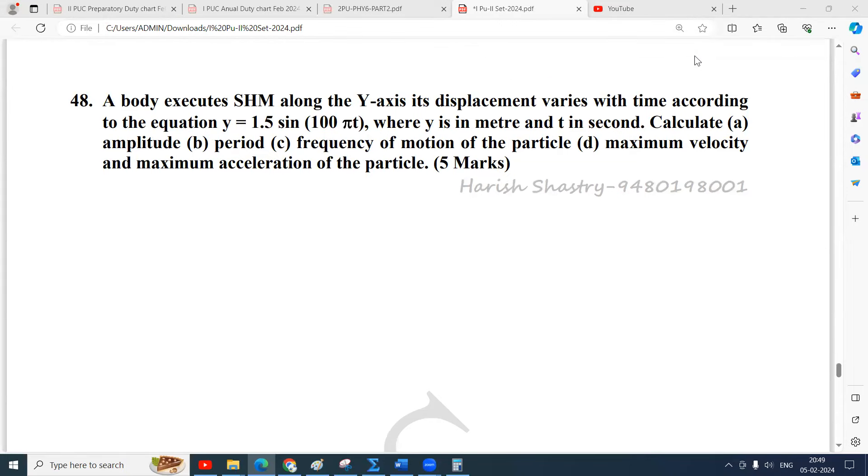Namaste everyone, let us solve this problem. A body executes SHM along the Y-axis. Its displacement varies with time according to the equation y equals 1.5 sine 100 pi t, where y is in meters and t is in seconds. Calculate amplitude, period, frequency, and maximum velocity and maximum acceleration of the particle.